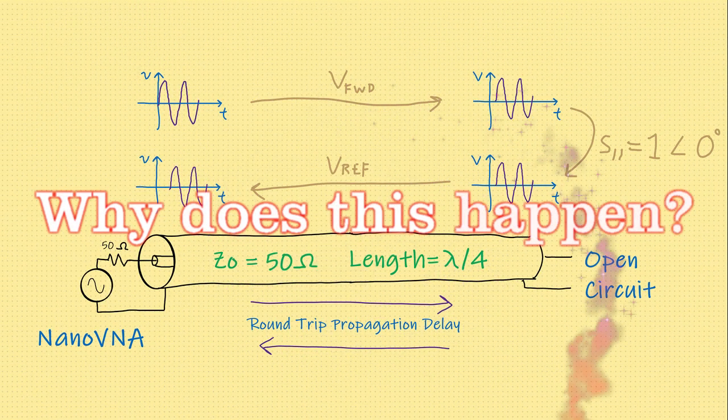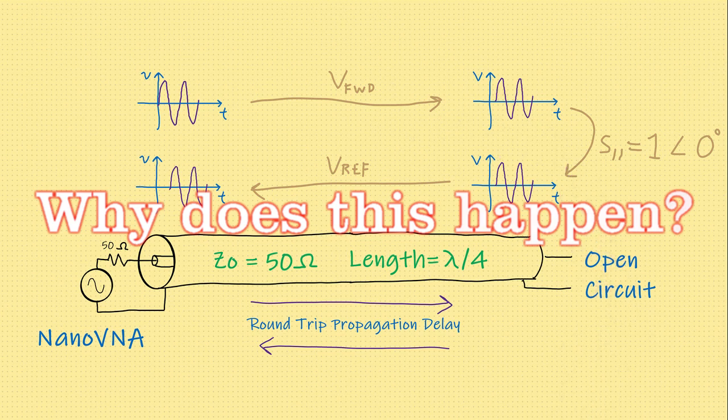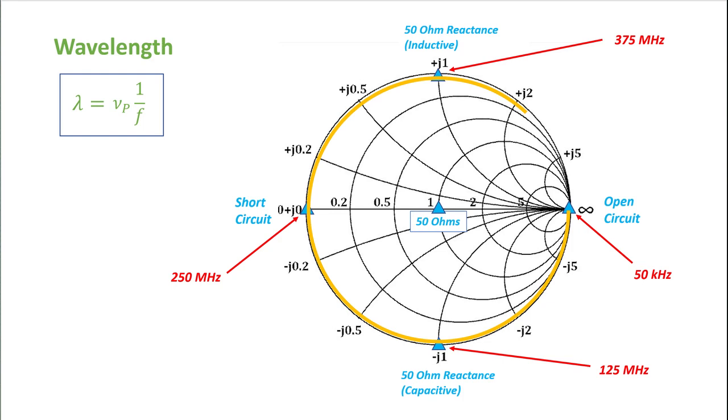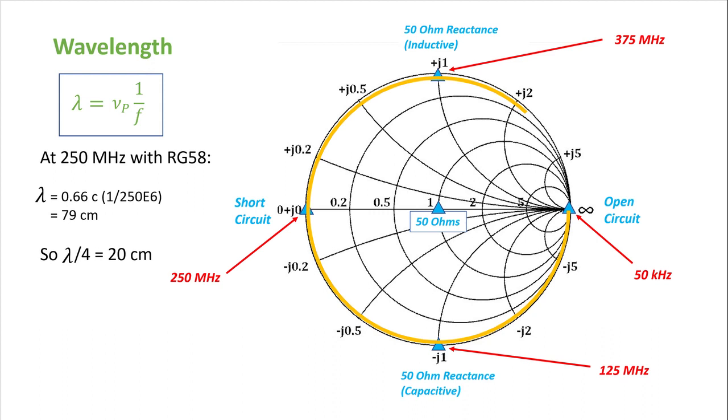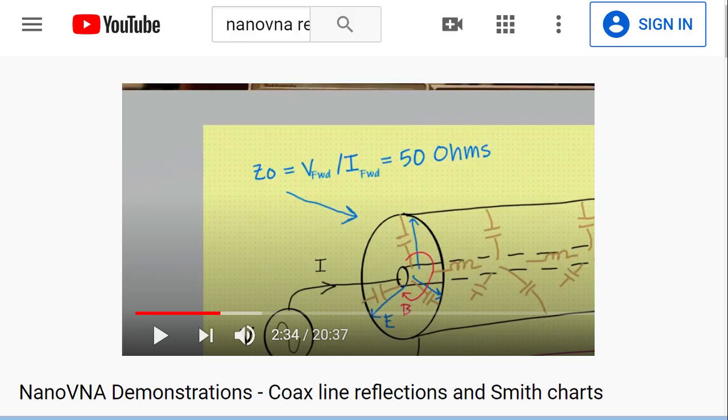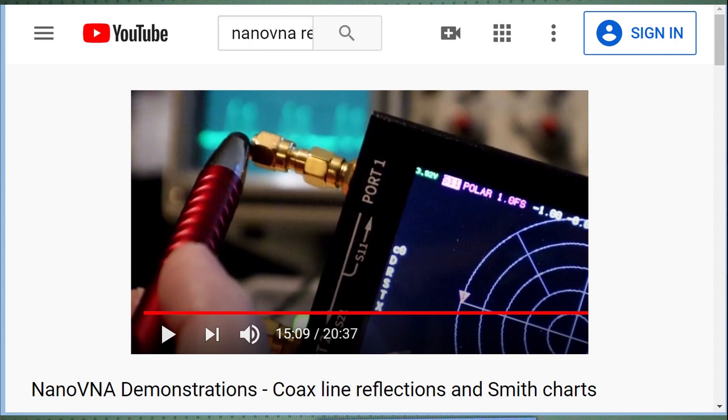Now, why does this happen when we just put a short length of cable onto the nano VNA? Well, the answer has to do with how short is short. And the answer to that is it depends on the wavelength, which depends on the frequency of the signal. And that's what we're going to walk through here and try to explain. In a previous video titled Nano VNA Demonstrations, Coax Line Reflections and Smith Charts, we went over essentially how the VNA works.